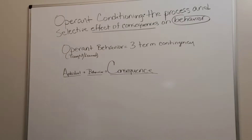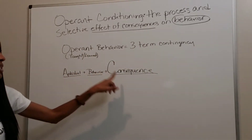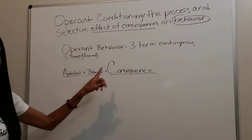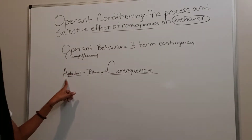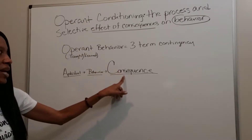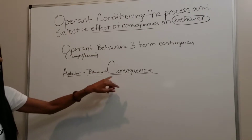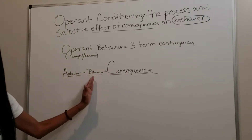Operant conditioning is a process and selective effect of consequences on behavior — you're selecting which consequence the behavior is going to come in contact with. Remember that operant behavior is a three-term contingency: A, B, C — antecedent, behavior, consequence. If you have an antecedent, then you're going to have some type of response or behavior, then you're going to have some type of consequence.